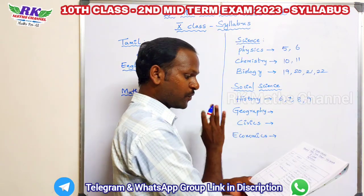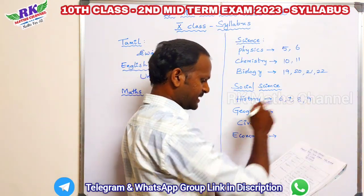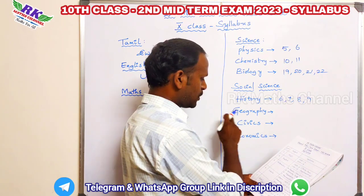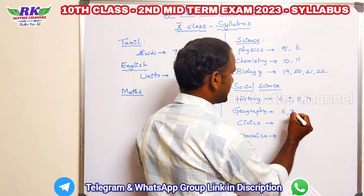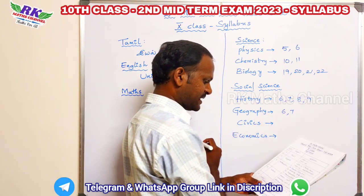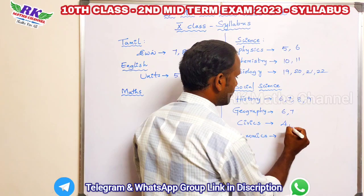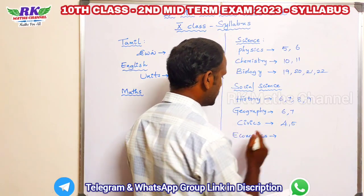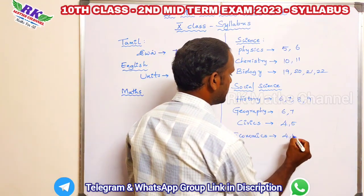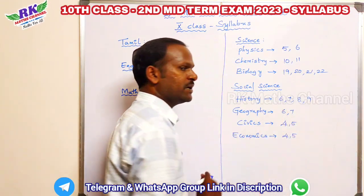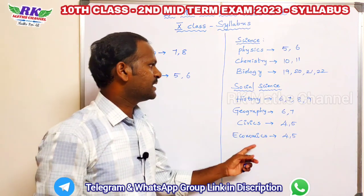For Social: History units 6, 7, 8, and 9 — that's 4 units. Geography units 6 and 7. Civics units 4 and 5. Economics units 4 and 5.